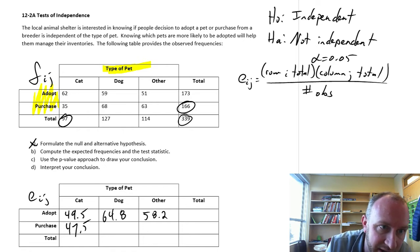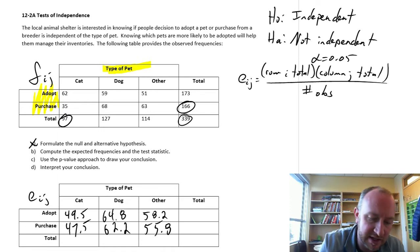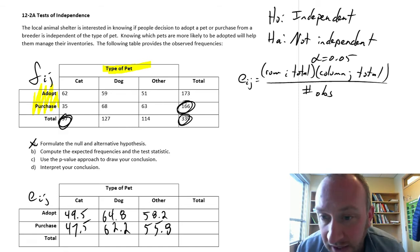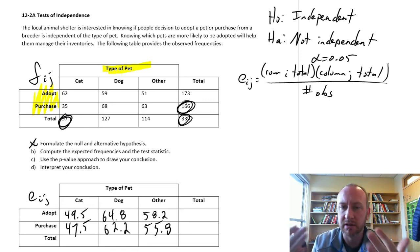And I'm just going to skip ahead and fill in the rest here. 62.2 and 55.8. So again, it's just these individual totals, the relevant row, relevant column times, sorry, divided by the overall total.